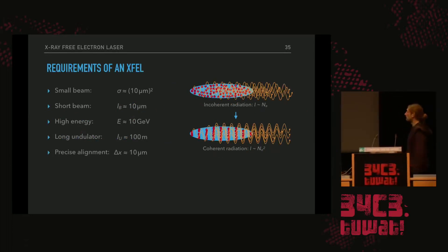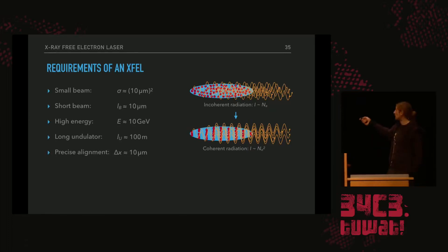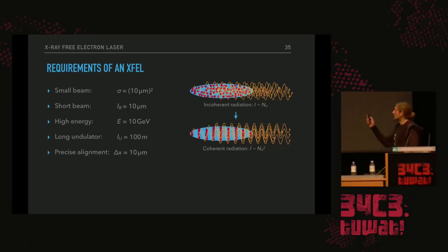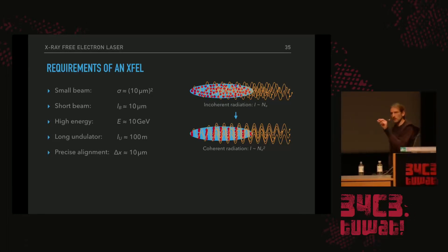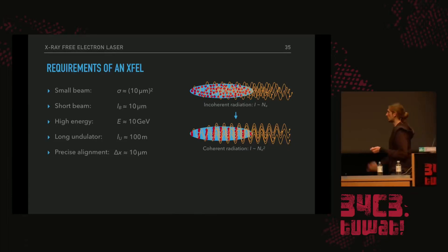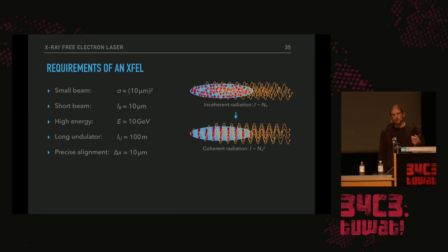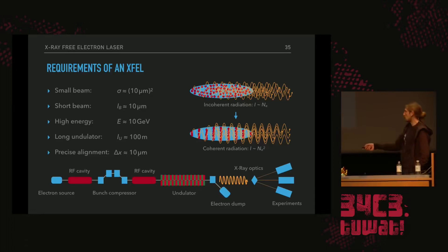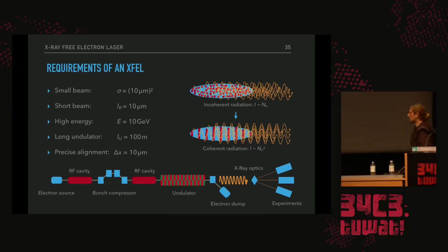To achieve free-electron-laser gain we need a beam transverse size of about 10 micrometers, bunch length of about 10 micrometers, energy of about 10 billion electron volts, and a long undulator of some hundred meters, with electron alignment to better than 10 micrometers for overlap between electrons and their light. A typical XFEL layout has different acceleration stages separated by magnetic chicanes called bunch compressors to produce very short bunches, followed by a long undulator, after which electrons are dumped and the X-ray light is delivered to experiments.